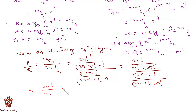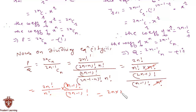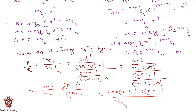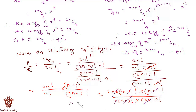This can further be simplified: we write 2n factorial as 2n into (2n minus 1) factorial, times (n minus 1) factorial, divided by n factorial written as n times (n minus 1) factorial, keeping (2n minus 1) factorial as such. We can now cancel all the common terms and we are left with 2.